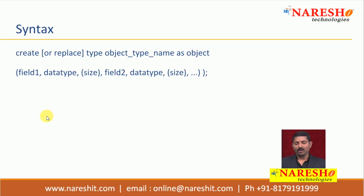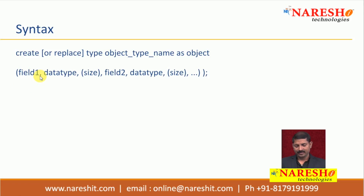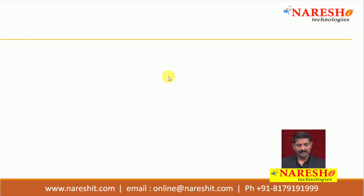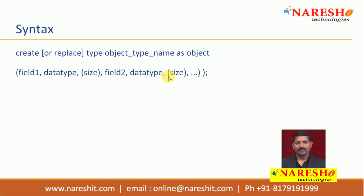To create a composite type or object type, the syntax is pretty simple: CREATE OR REPLACE TYPE object_type_name AS OBJECT, followed by the fields definition — field_one data_type(size), field_two data_type(size), and so on. This is how you create an object type.